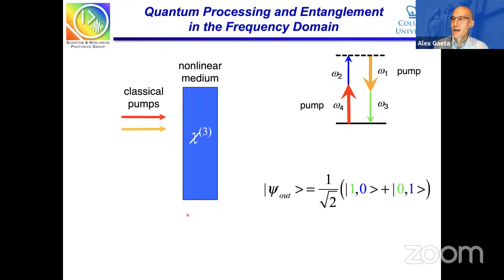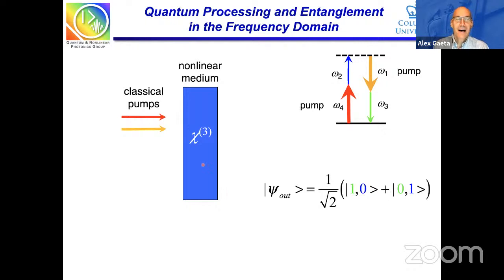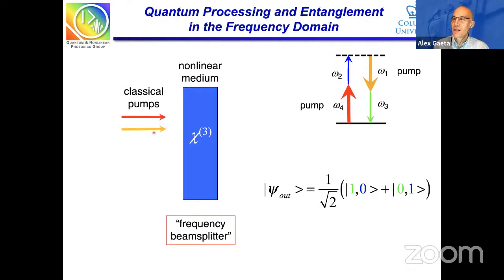You need some nonlinear process to do quantum processing in the frequency domain. You could use a modulator, but it turns out you can do this very well with nonlinear photonics. The frequency beam splitter we'll create is based on a third-order nonlinear medium. Almost any material you can think of has a Chi-3 nonlinearity — even vacuum has one. We pump this medium with two pump waves, indicated by red and yellow, and this forms our frequency beam splitter.